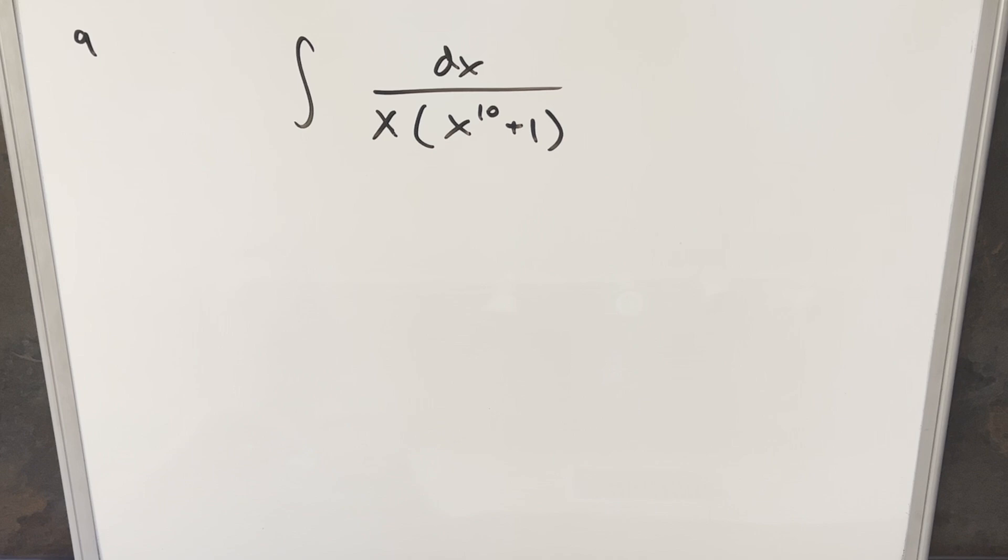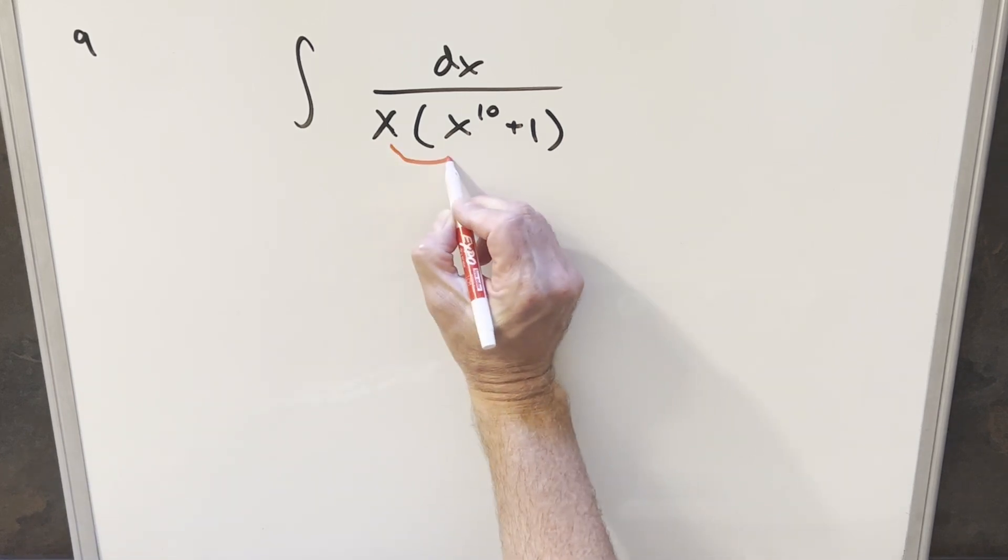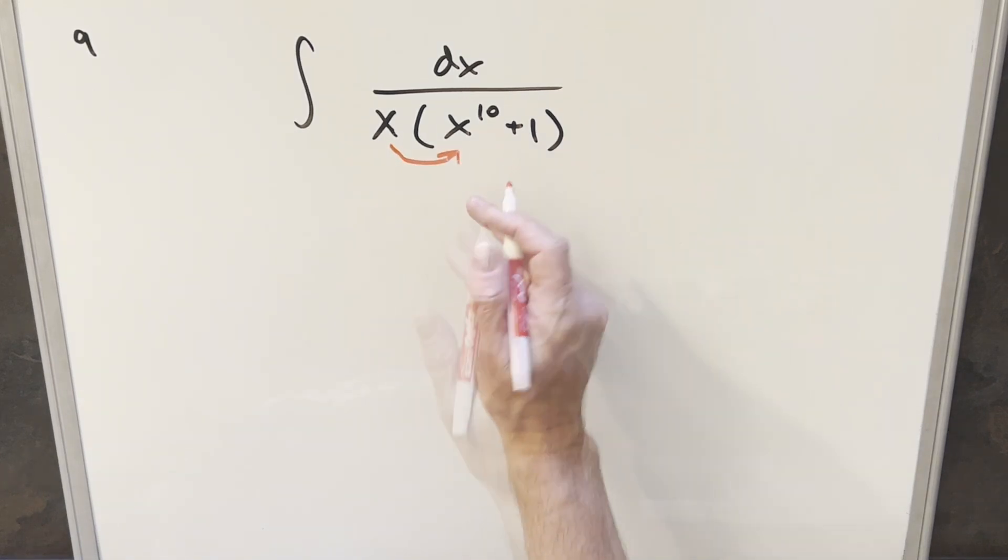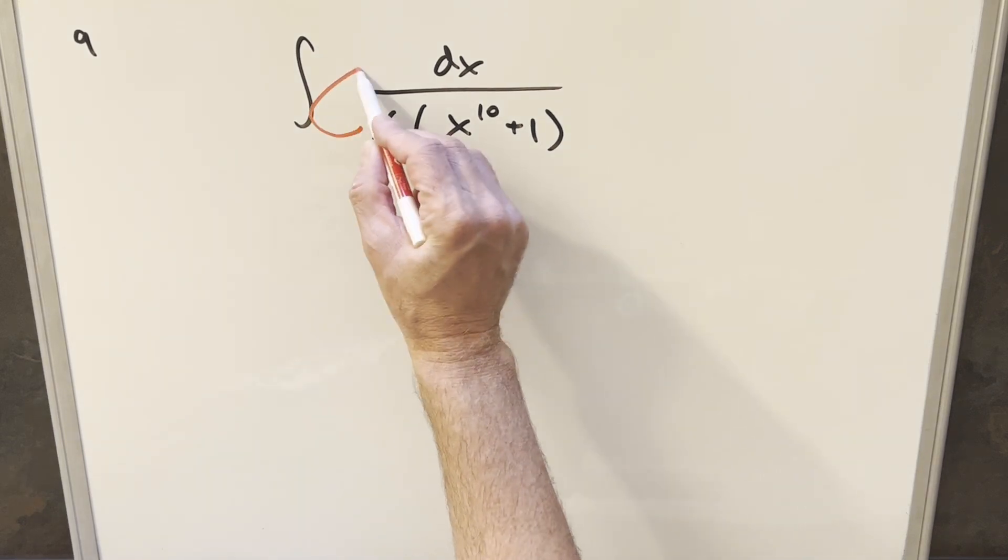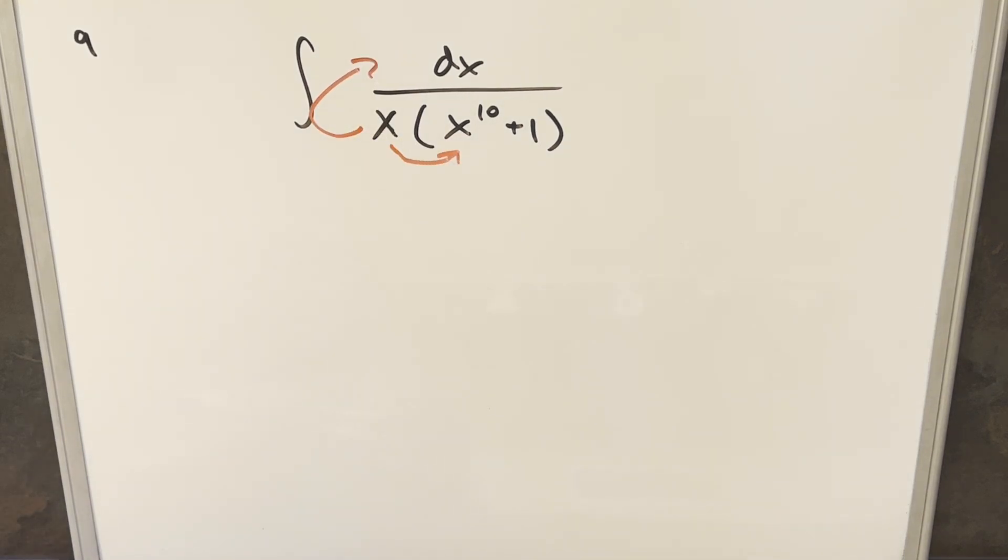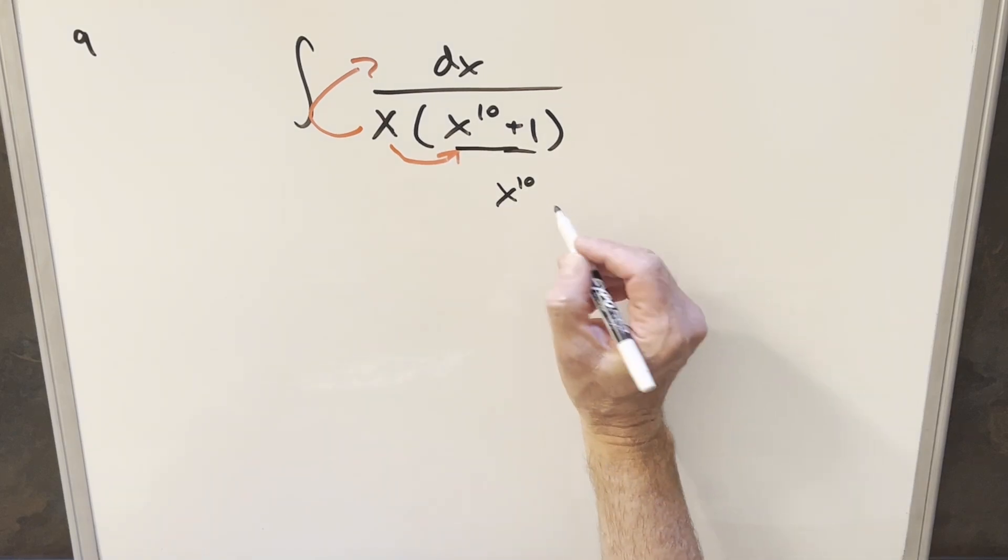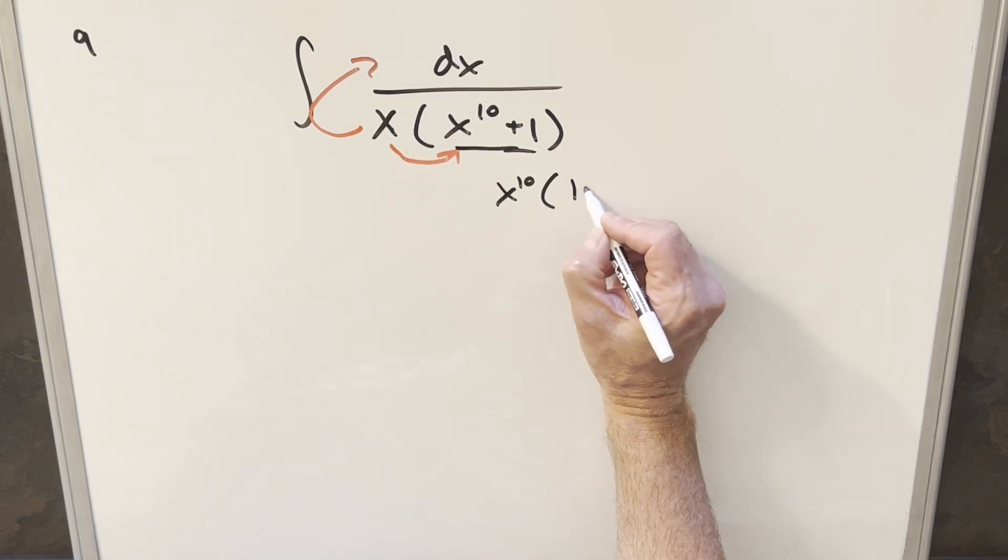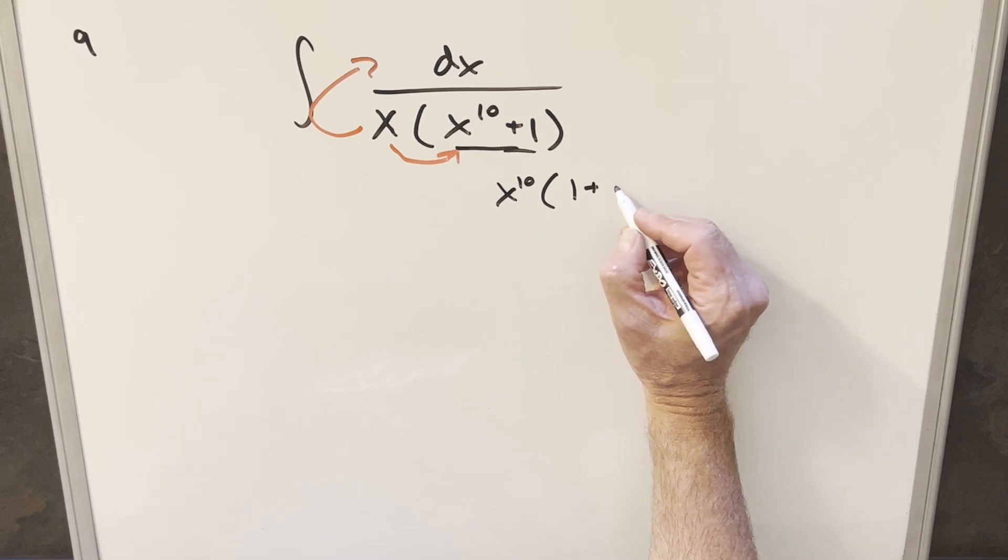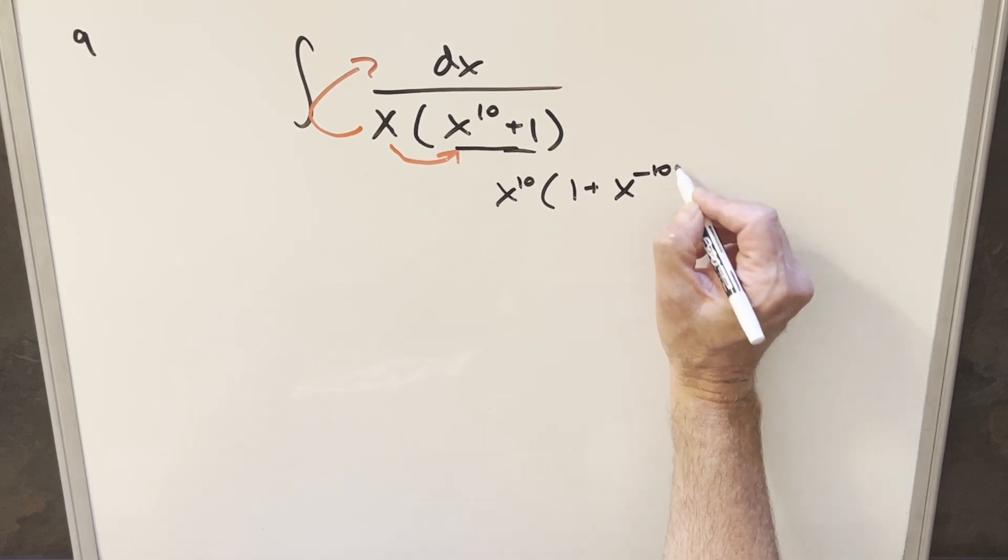For this one here, I definitely don't want to multiply in this x because working with x to the 11th plus x isn't that great. So instead, I think what I want to do is bring this into the numerator. But before I do that, let's factor this. I can factor out x to the 10th and write this as x to the 10th plus 1 times x to the minus 10th.